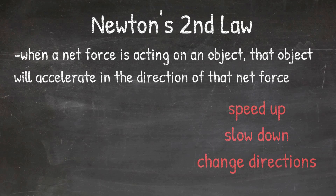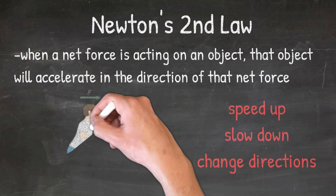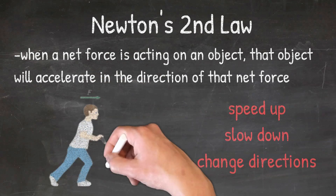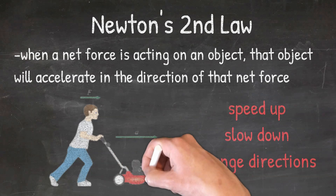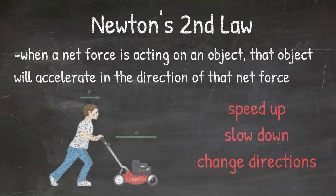In our example here, a man is pushing a lawnmower. He is applying a force in the forward direction, or to the right. According to Newton's second law, the lawnmower would then accelerate, or start moving, to the right, because that is the direction the force is being applied.